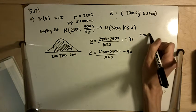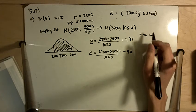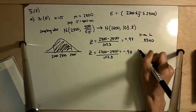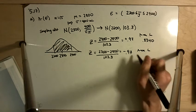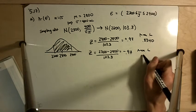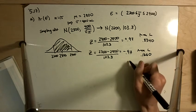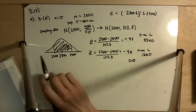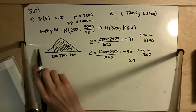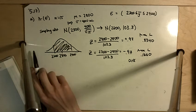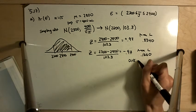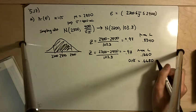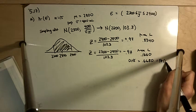The area to the left of positive 0.97 is 0.8340, and the area to the left of negative 0.97 is 0.1660. The difference — the area in between — is 0.6680, and that is the probability of E.